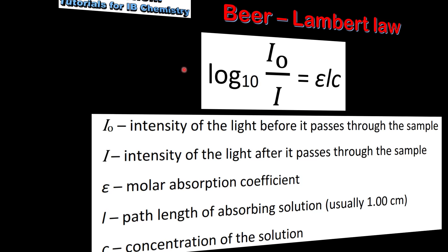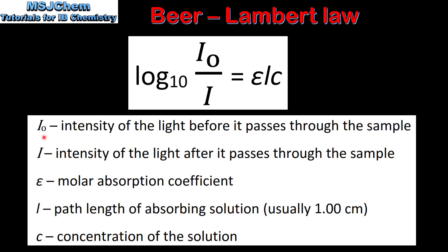Next we'll have a look at each part of the equation in more detail. We have the intensity of the light before it passes through the sample, the intensity of the light after it passes through the sample, the molar absorption coefficient, the path length of the absorbing solution which is usually one centimeter, and the concentration of the solution.